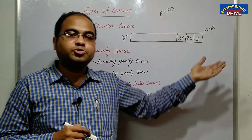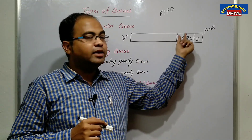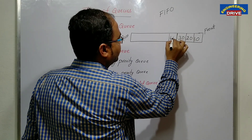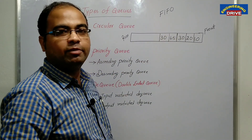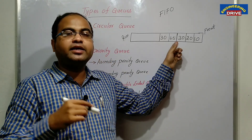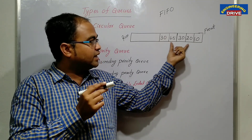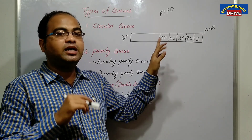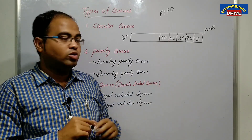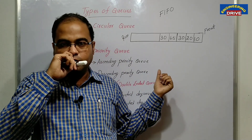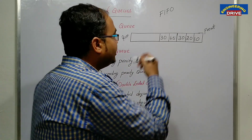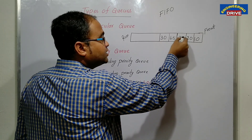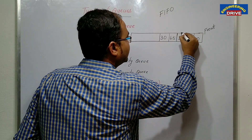Because I have assigned 30 the highest priority, according to the priority queue concept, that 30 element will be deleted first. Now, what happens if the same element appears two times — say 45 and 30, and 30 appears twice? Both 30s will have the same priority. In that case, the priority queue follows the next-level FIFO principle: the 30 that was inserted first will be out first. So first it follows the priority concept, and if both numbers have the same priority, it falls back to FIFO.